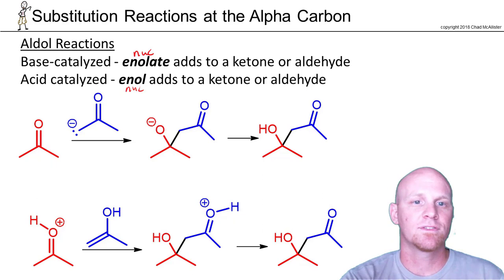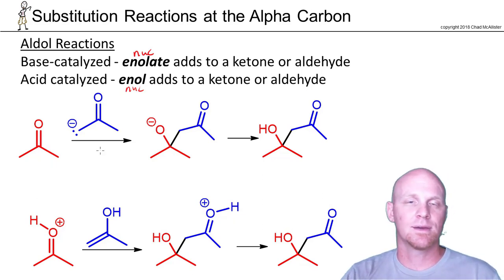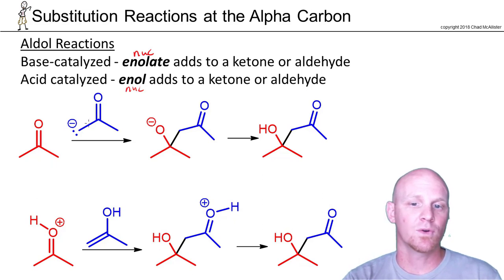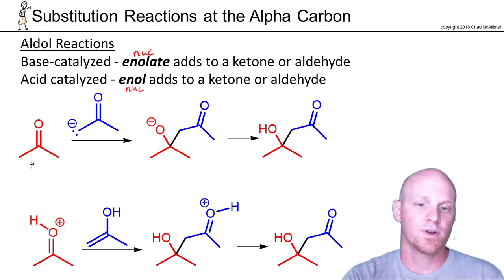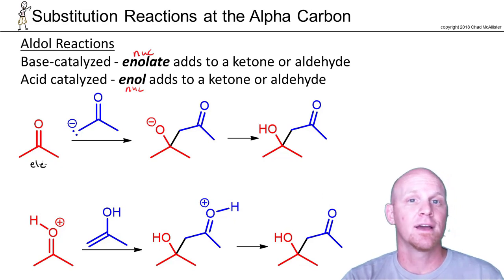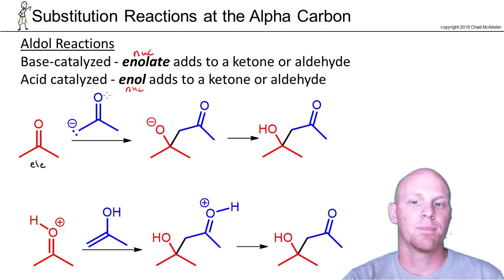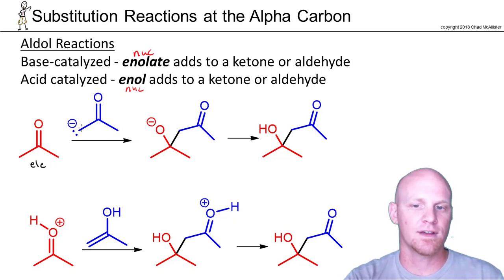We'll take a look at what's going on with both, but this is going to be a little bit tough to keep track of. That's why I've drawn two different ketones here, one red and one blue. This red one is going to be the electrophile — from its perspective, it's doing a nucleophilic addition reaction, just like we studied with ketones and aldehydes in the past. But the blue one here is an enolate — notice the alpha carbon has been deprotonated.